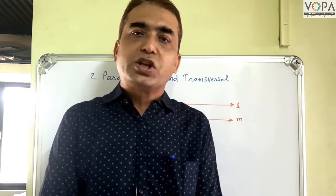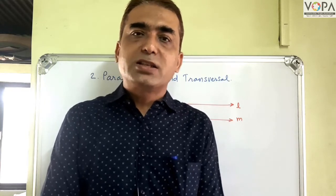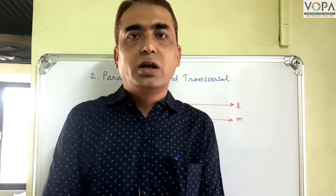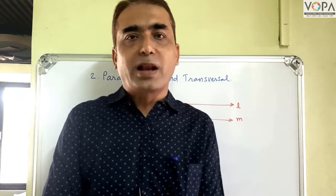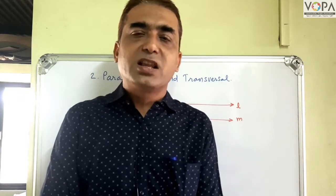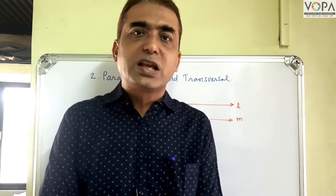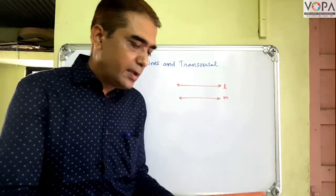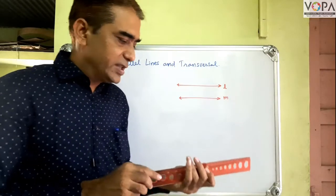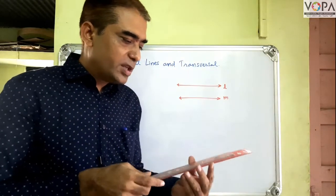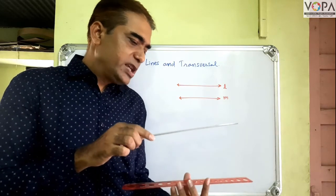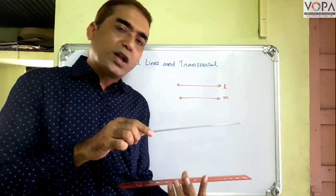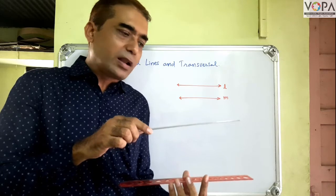The definition of parallel lines is that two lines in the same plane which do not intersect each other are called parallel lines. Suppose these are two lines and these lines are not intersecting each other — therefore these are parallel lines.